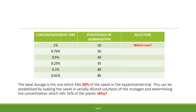The ideal dosage is the one which kills 50% of the seeds in an experimental trial. This can be established by soaking the seeds in serially diluted solutions of the mutagen and determining the concentration which kills 50% of the plants. A strong concentration may result in excessive mortality, whereas a low concentration may result in high survival but a low number of mutants. The dosage must be ascertained for each species, as this varies from plant to plant.